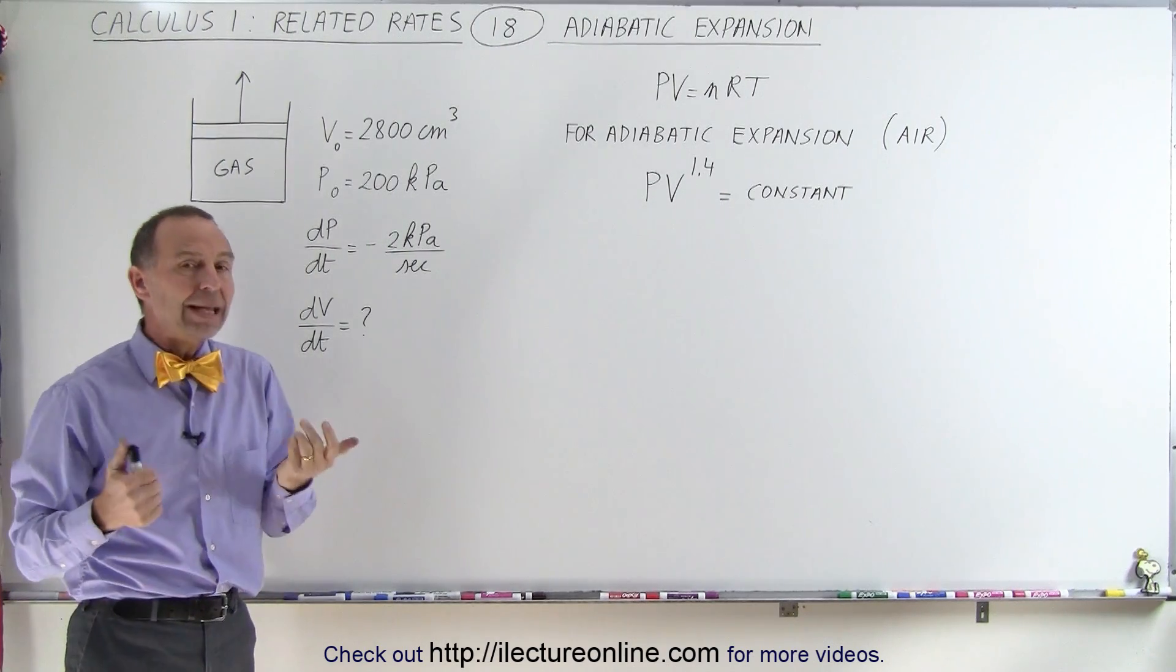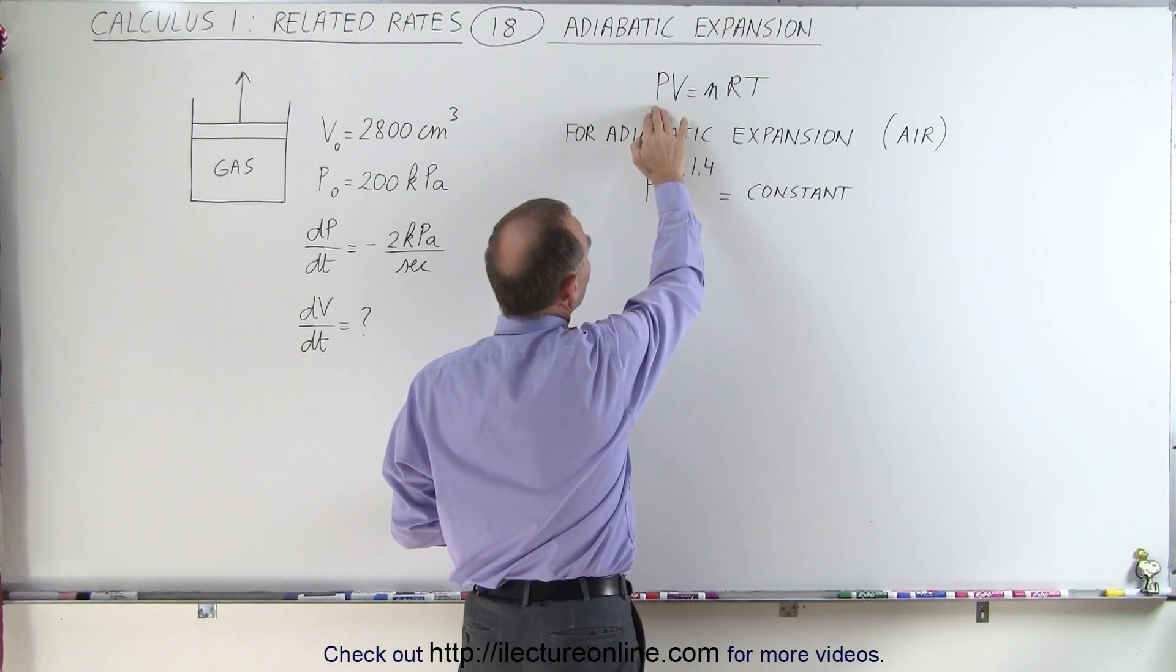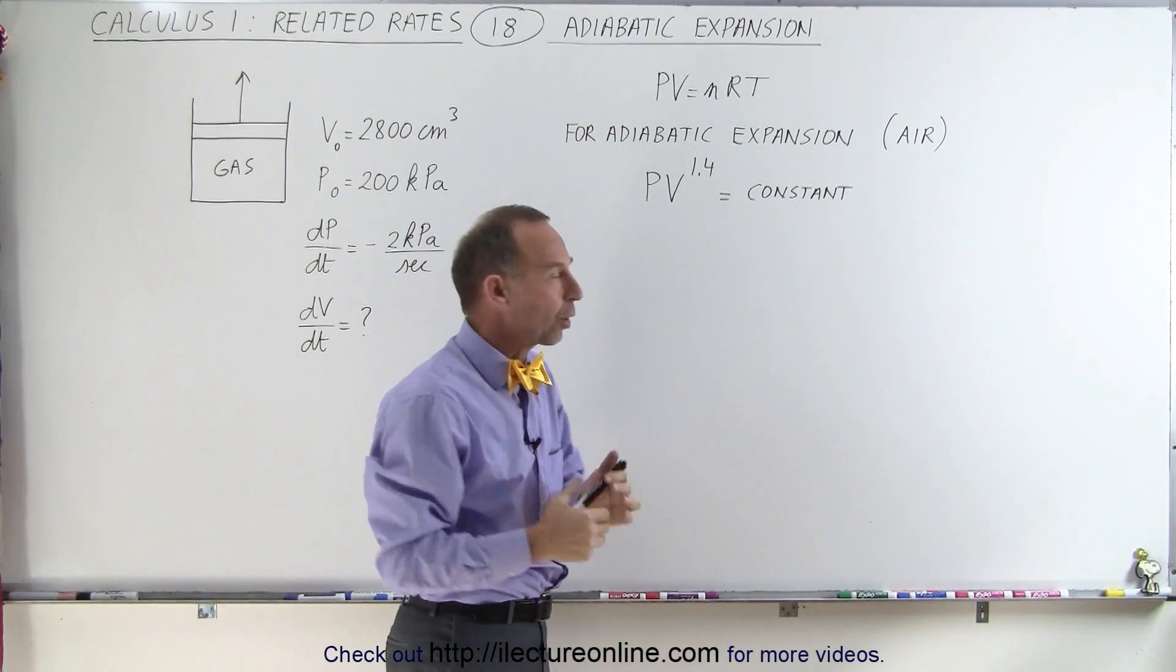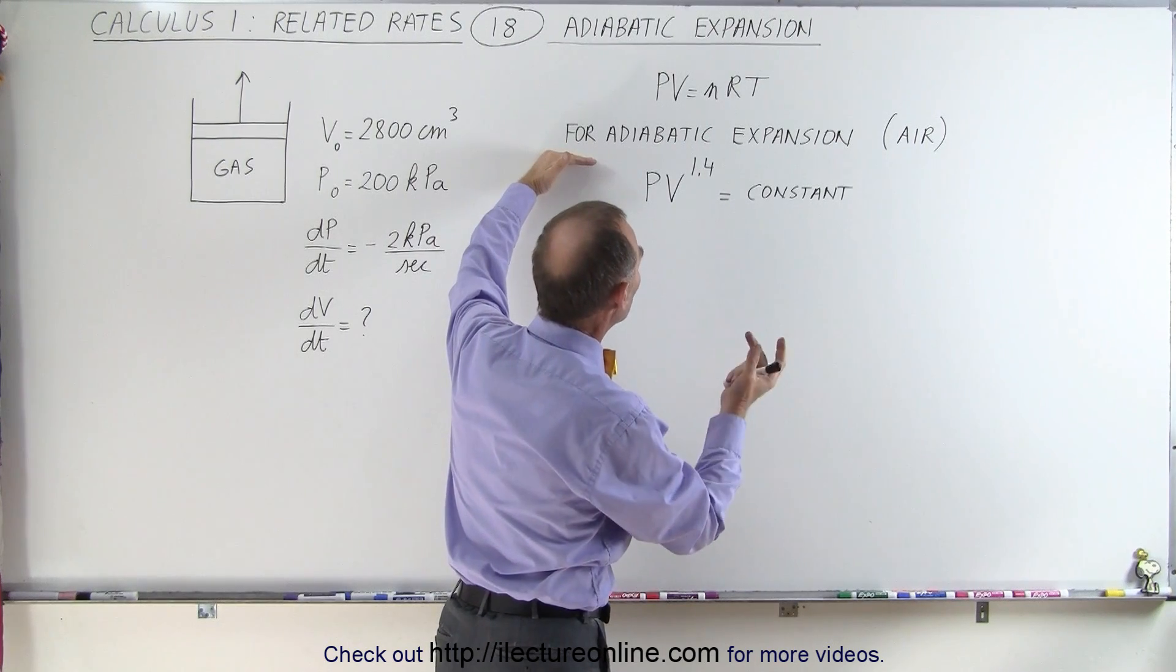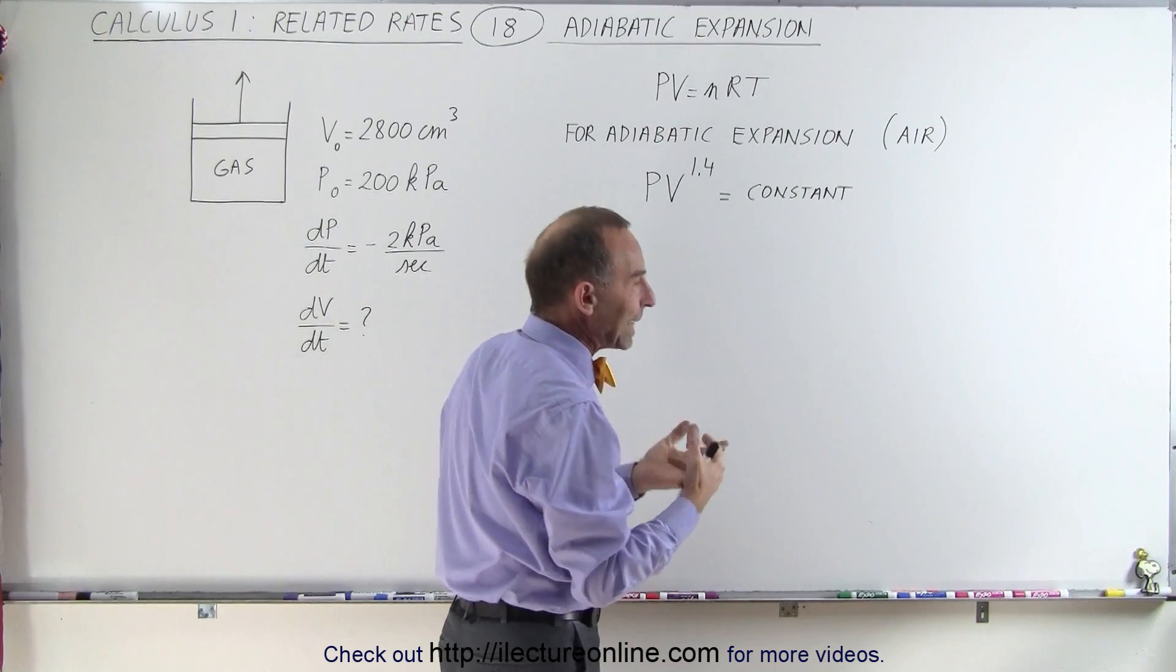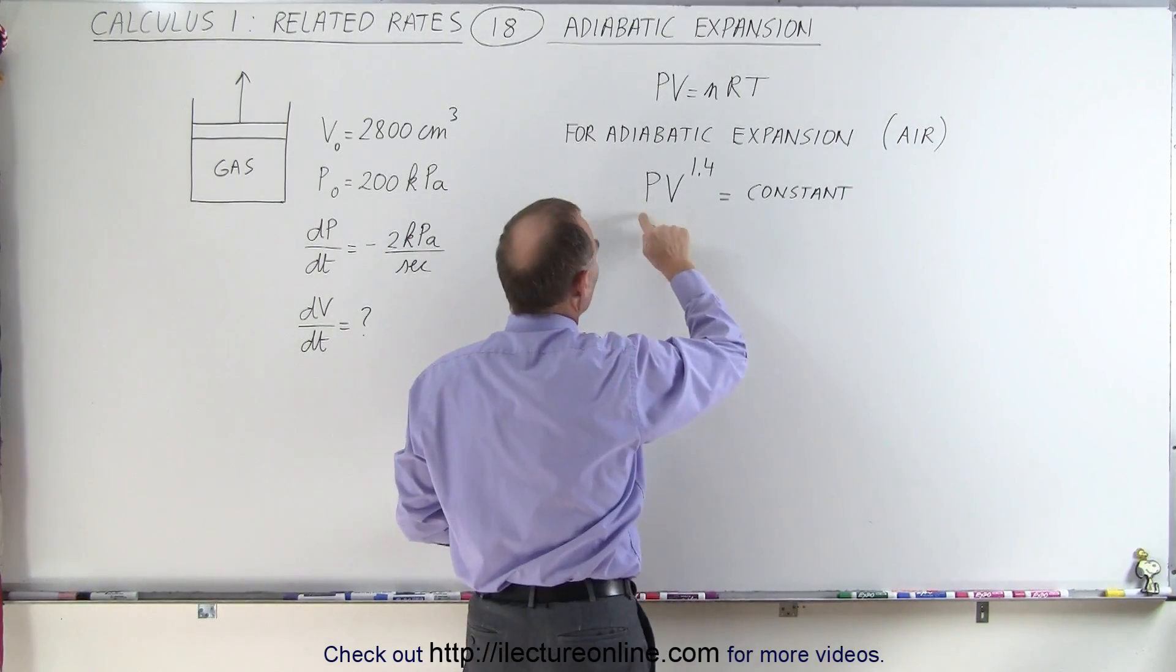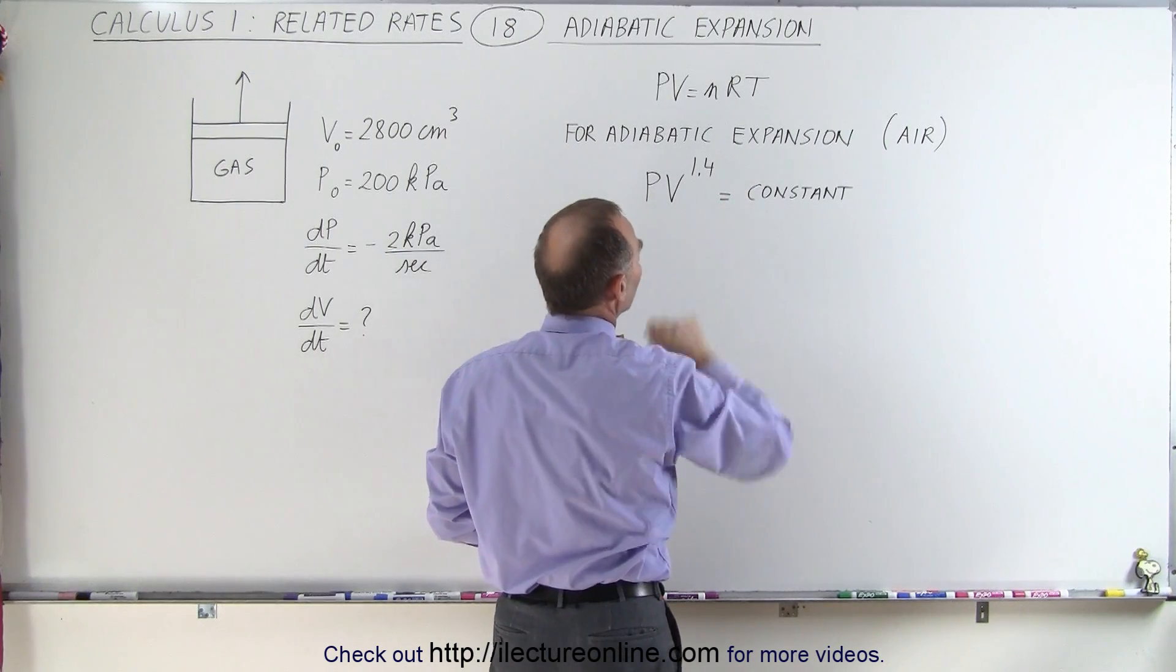With an adiabatic expansion, when we start out with the general gas equation PV equals nRT, we realize that if we work the equation and understand the adiabatic process, there is a relationship between pressure and volume. It turns out that for a gas that is diatomic such as air, the pressure times the volume to the 1.4 power equals a constant.